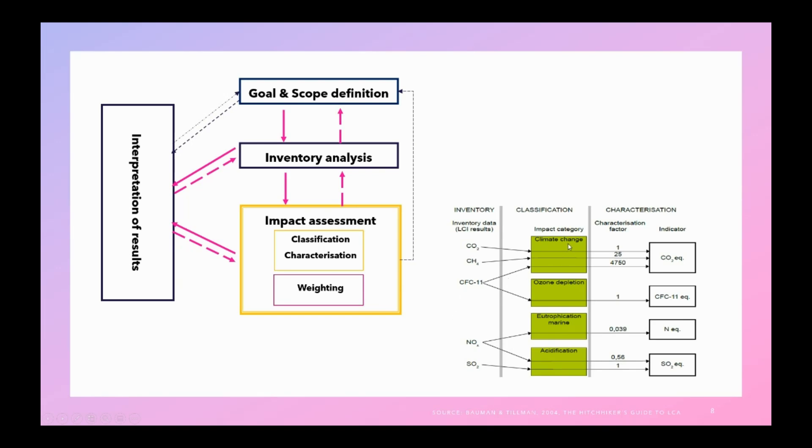Into impact categories based on the method. In this case, carbon dioxide, methane, and CFC have the impact on the climate. And at the same time, CFC is also linked to ozone depletion, also having impact on the ozone layer. So that is with a factor of one. So when you classify all the emissions, inventory emissions, into impact categories, then you characterize them.